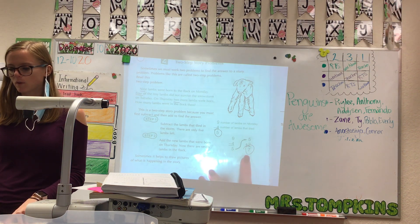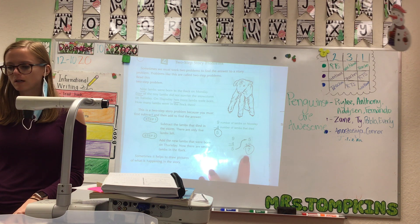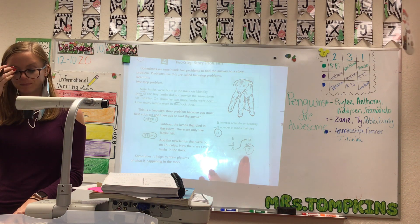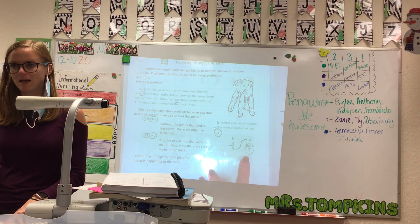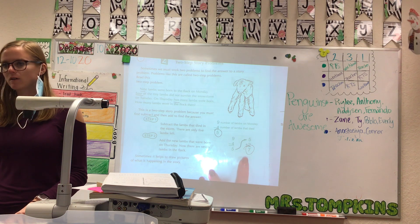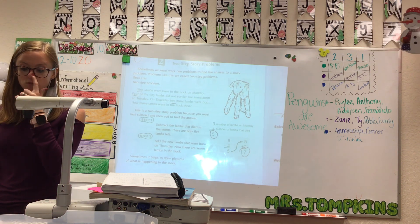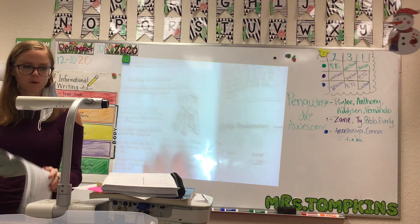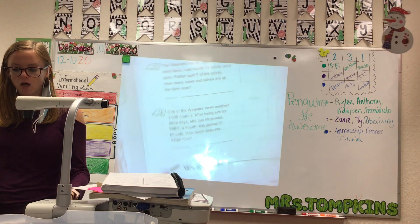So what's our answer? What answer would I write down? Anastasia? Seven. Seven — because that was the final answer after we followed the two-step story problem. So go over to number one. Let's do it together.